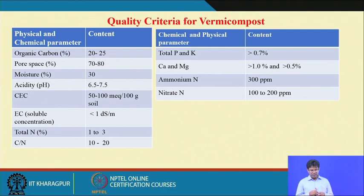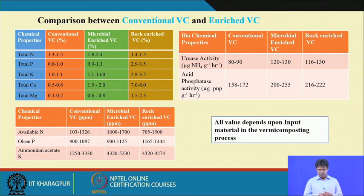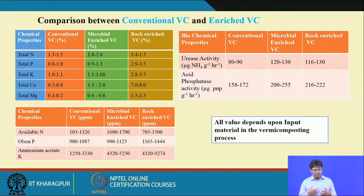Comparing conventional vermicompost, microbial-enriched vermicompost, and rock mineral-enriched vermicompost — data from our own research. The vermicompost has a high residual effect unlike chemical fertilizers, where nutrients are available for short periods due to fast mineralization. Vermicompost undergoes slow mineralization over a long time, so total nitrogen is available for longer periods. This is important for cropping systems where nutrient management should account for residual effects to achieve better production at minimum input cost.